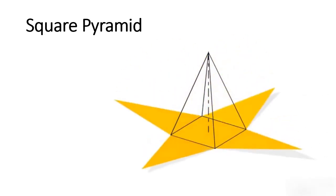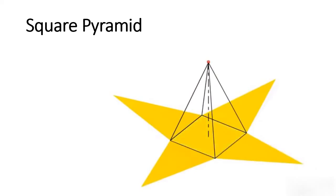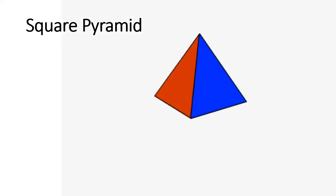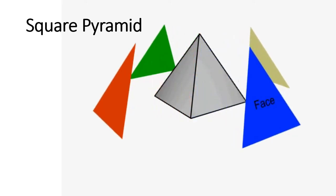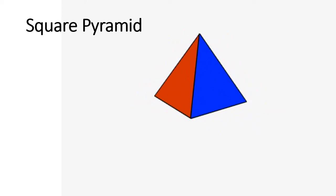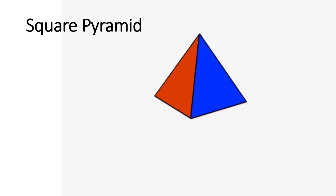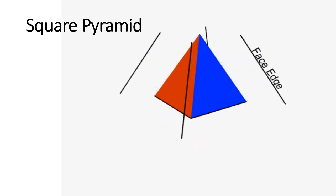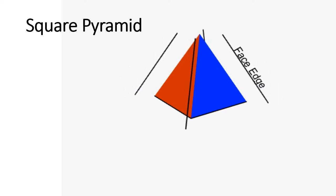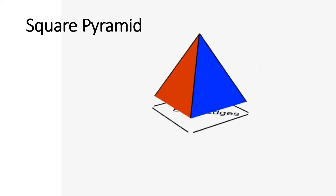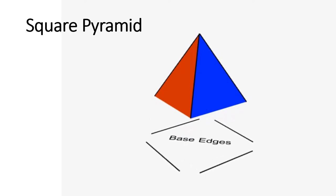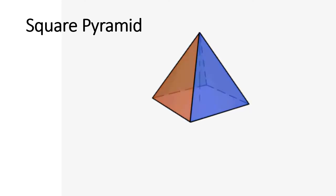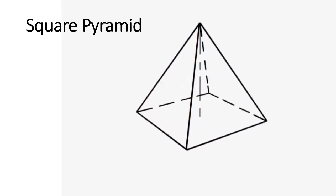For a square pyramid, we consider one square base. There are four different lateral faces, a base, and four different lateral edges. The base edges form the base, and then we have the imaginary line axis which connects the center of the base to the apex.